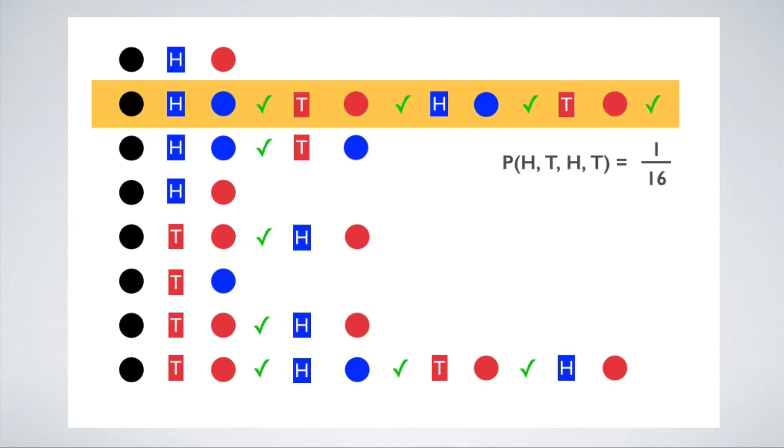By chance alone, if you toss four coins, the chances of getting this sequence are one in sixteen. Now did I predict the sequence? It looks that way to the coin tosser, but I didn't write down this specific sequence in advance and say this is what player two is going to get. What I'm really doing is generating predictions for all possible sequences of coin tosses, and then labeling the winning sequence after the fact.